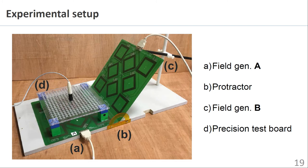This picture shows the actual experimental setup using the two field generators A and B. The tilt angle of field generator B, beta, is measured using a protractor centered at the fulcrum of rotation. A precision machined polycarbonate test board is used to precisely locate the magnetic sensor at known positions above field generator A.